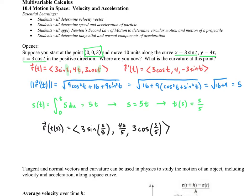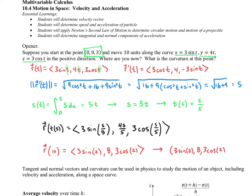Let's tackle the first question: where are you if you move along the curve 10 units? We substitute S equals 10 and get <3 sine(10/5), 4 times(10/5), 3 cosine(10/5)>, which simplifies to 3 sine(2), 8, and 3 cosine(2). That vector tells us exactly where we end up tracing out to reach that point — that's where we are. I'm not going to do the curvature right now as we're moving on to new topics in 10.4.